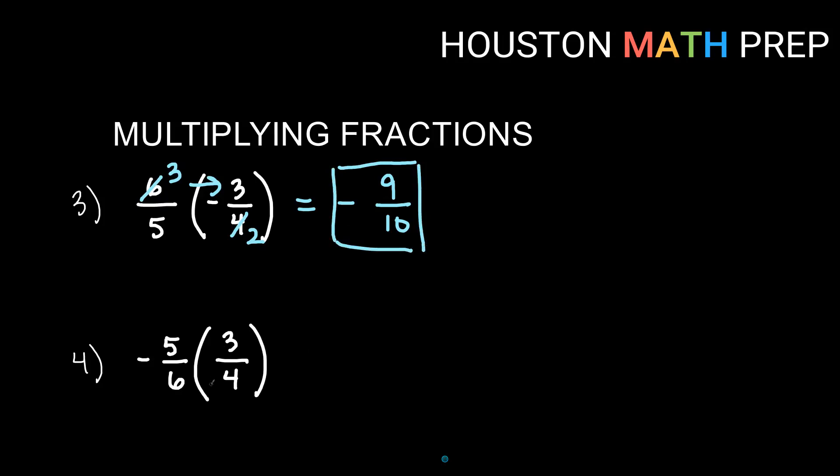Okay, let's look at this one. So now I have a negative 5 over 6 times a positive 3 over 4. So again, negative times a positive is going to be a negative. I decide that first. 5 times 3 would give me 15 on the top, and 6 times 4 would give me 24. We do have some common factors, though. So maybe I don't do that.